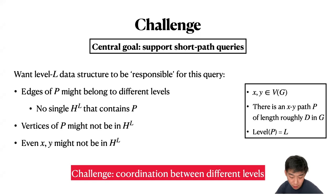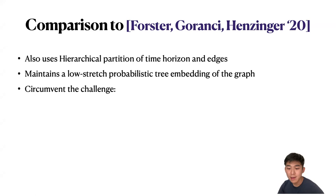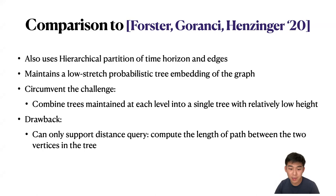Hierarchical partition of the timeline and edges have been used before for dynamic APSP. One recent example is Forster et al. 2020, who maintain a low-stretch probabilistic tree embedding of the graph and circumvent the coordination challenge by combining trees maintained at each level into a single tree of low height. However, their approach only supports distance queries. If we try to similarly combine graphs from different levels, we obtain another fully dynamic graph, and it is not clear how to support shortest path queries in that graph.